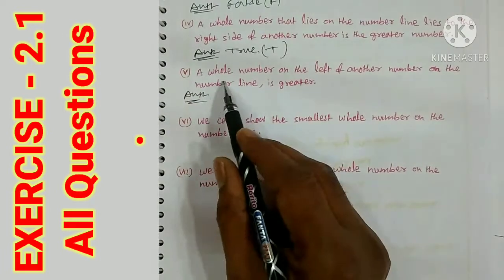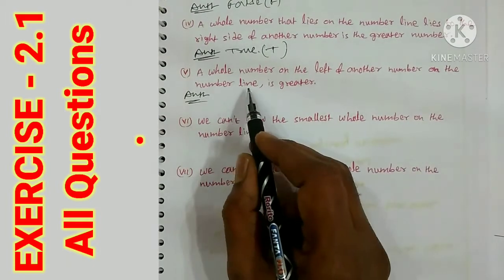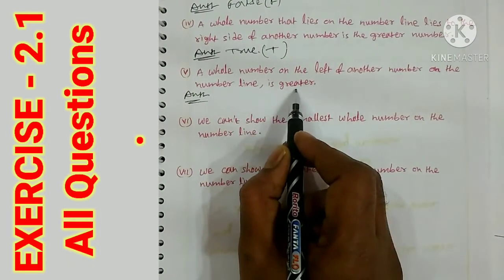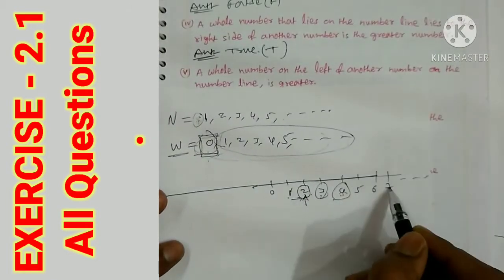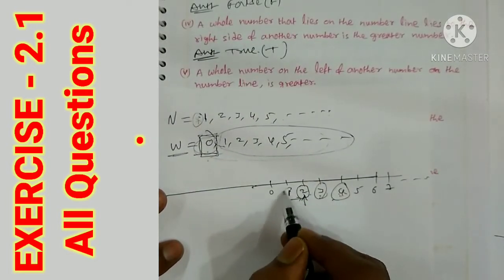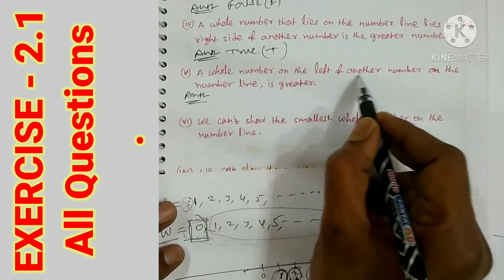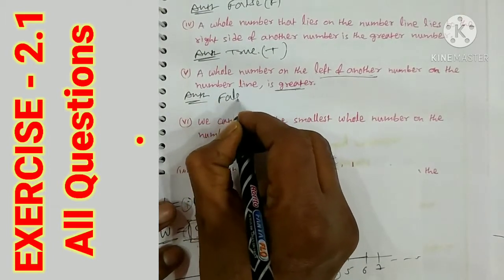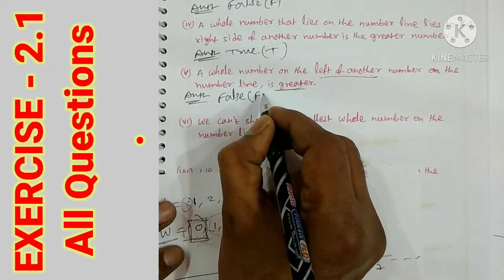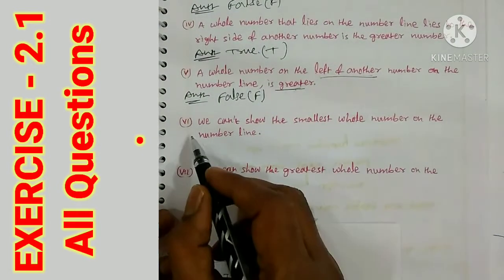Question 5: a whole number on the left of another number on the number line is greater. From question 4 we know the right side number is greater and the left side number is lesser. The left side value is smaller, not greater. So this is a false statement.